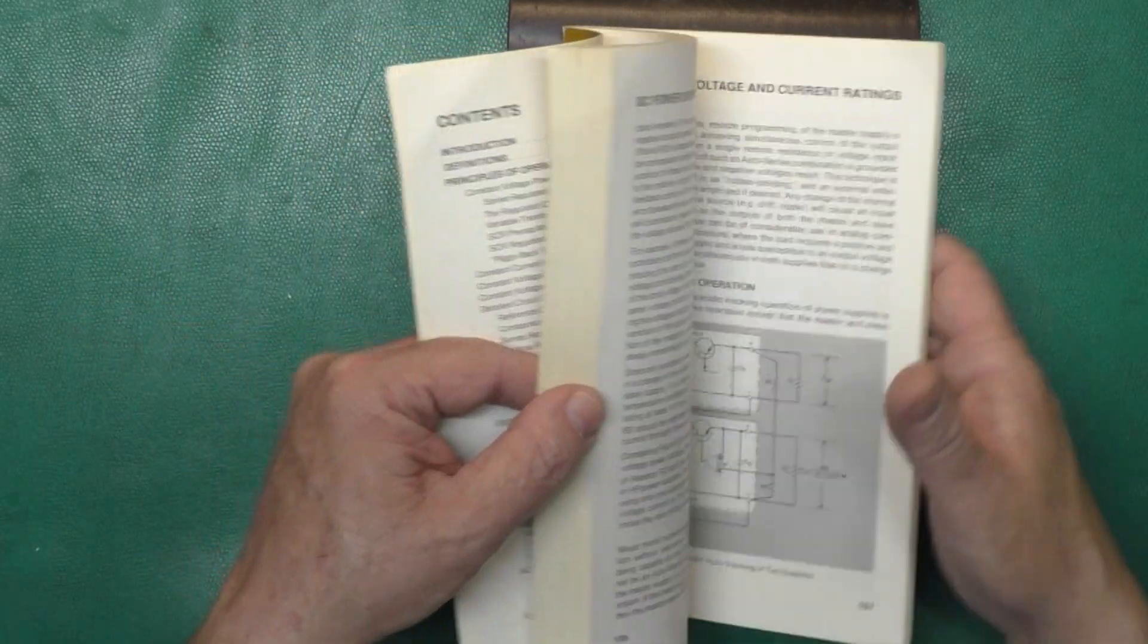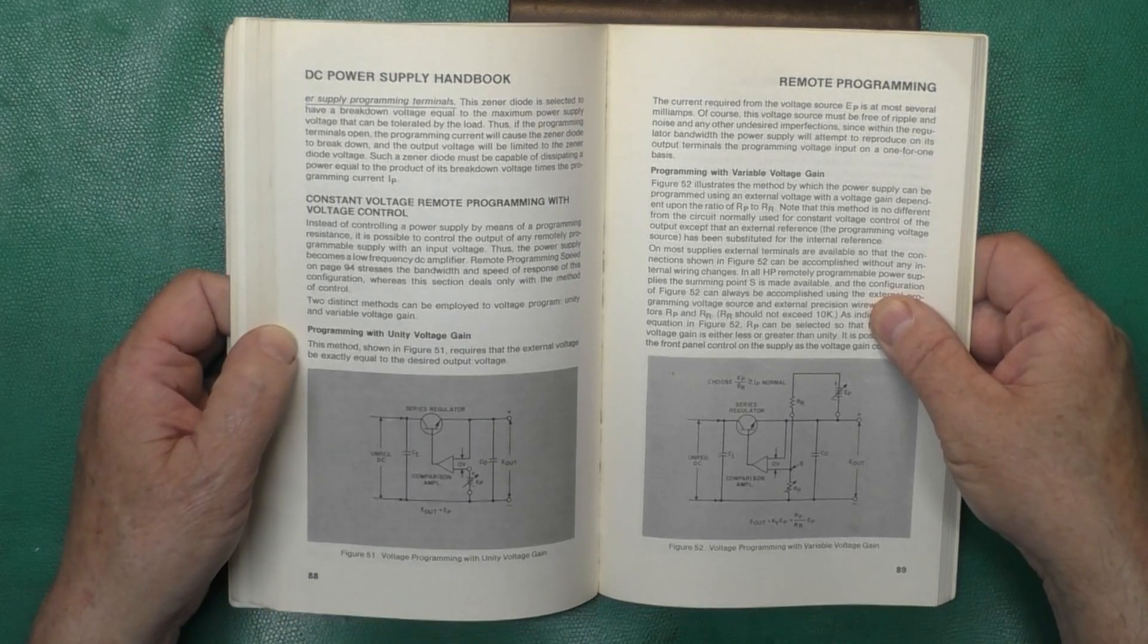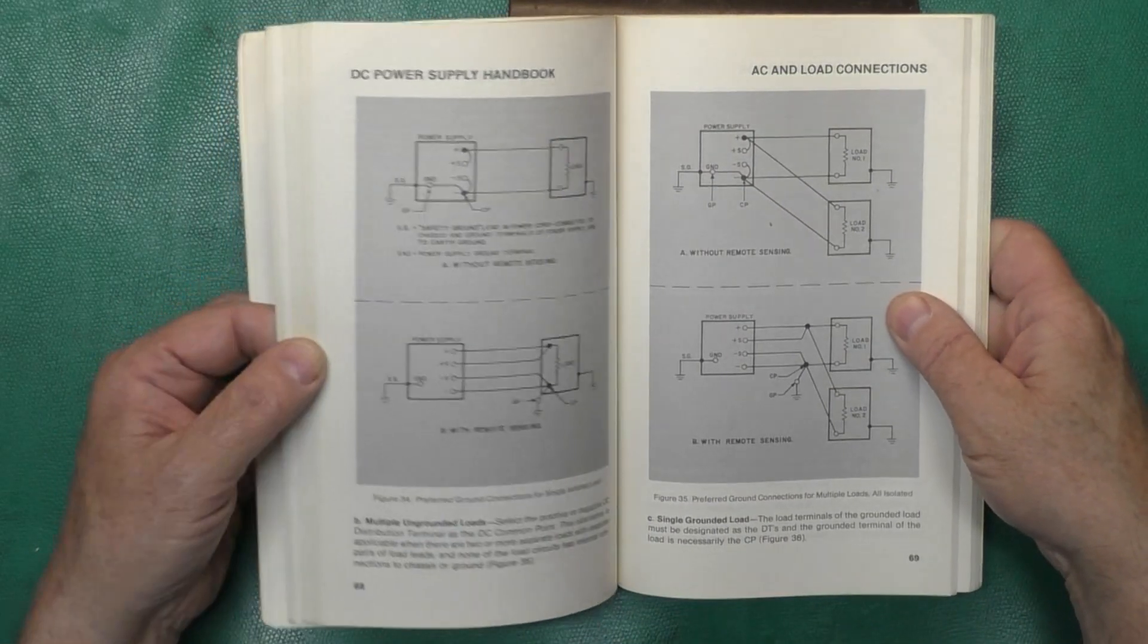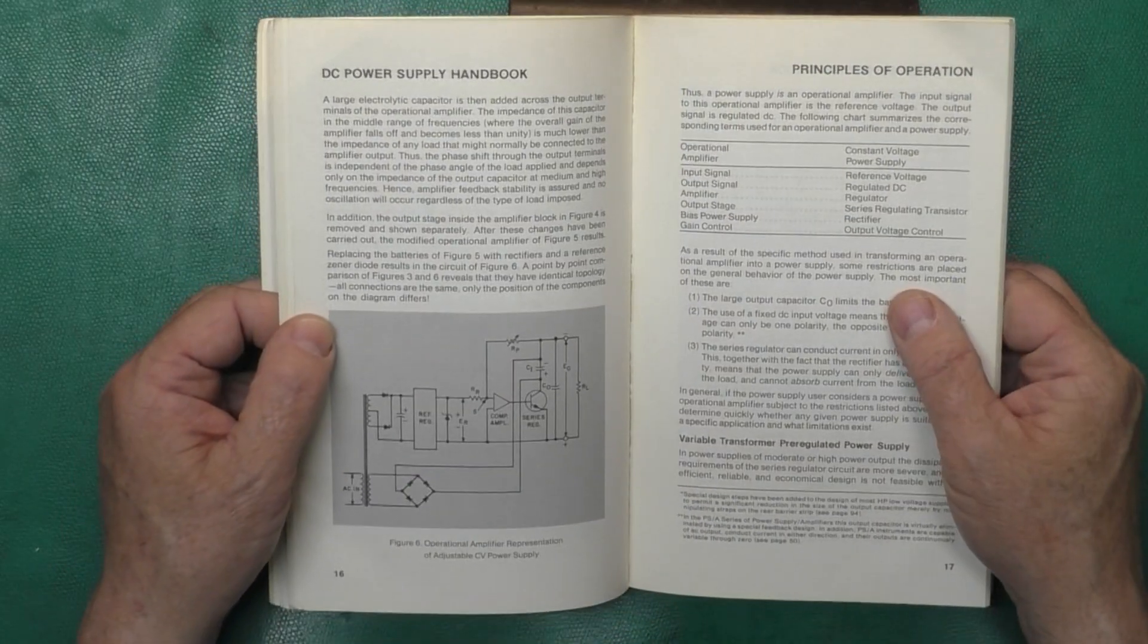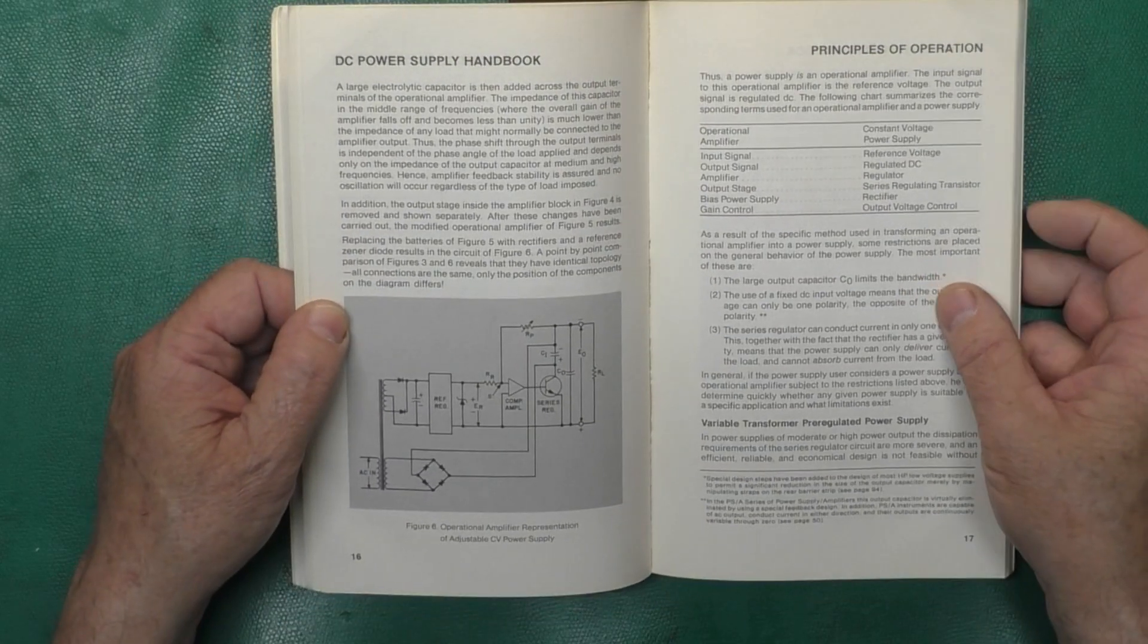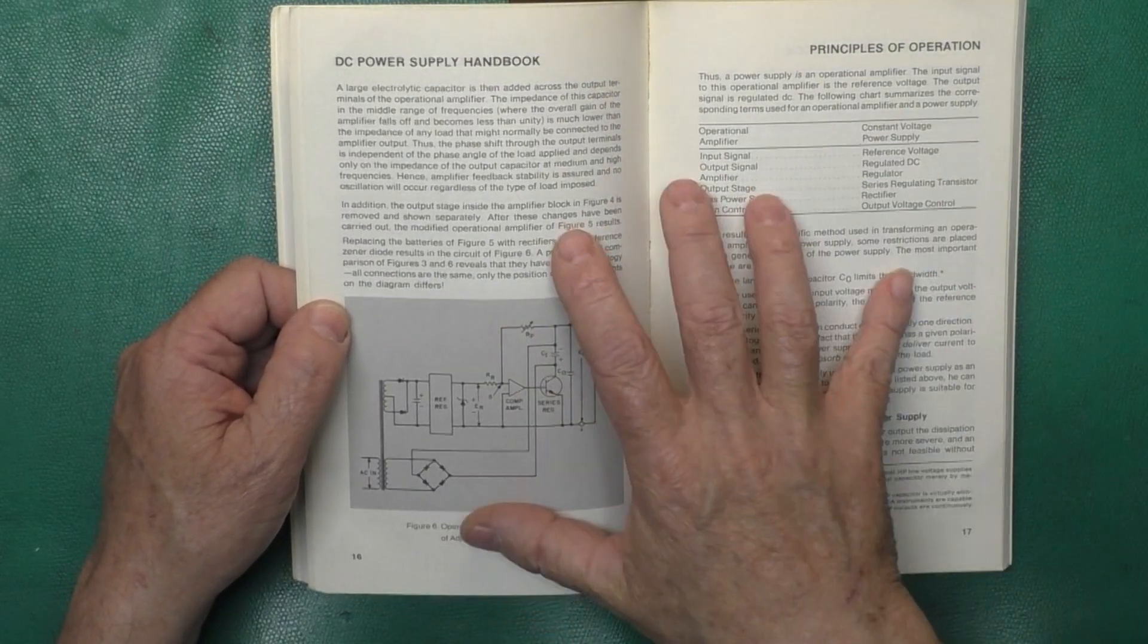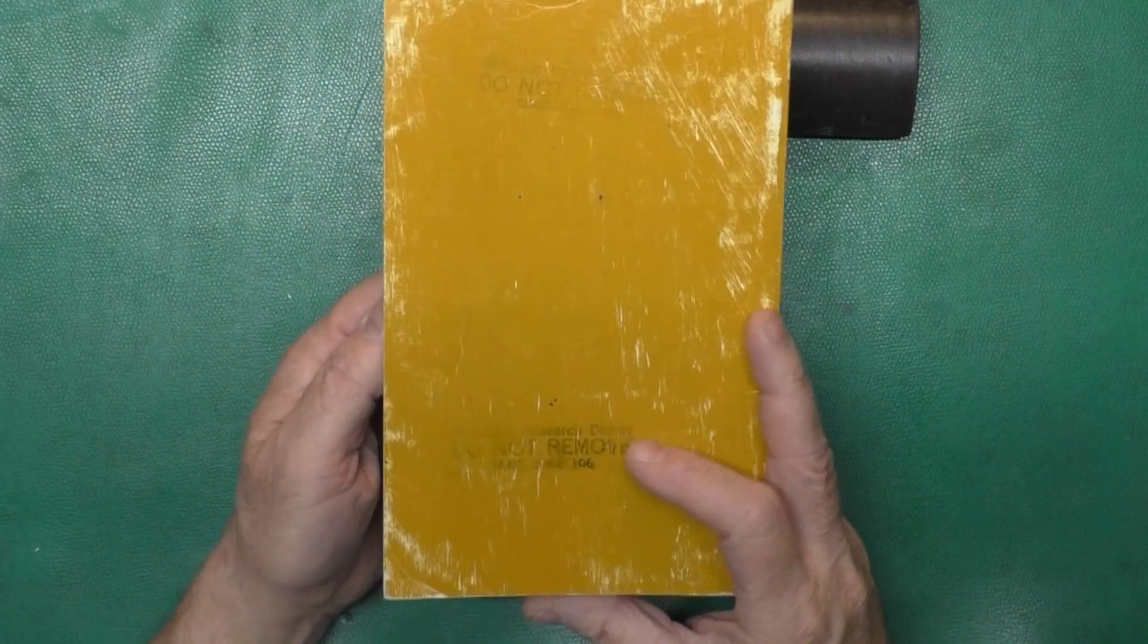So if we flip through here, it goes through all things about power supplies of that vintage, how they work, the different types of regulation, that type of thing. So this is very useful if you're working on older equipment, to be able to look up how your particular type of power supply works or that section of the power supply. Very handy reference.